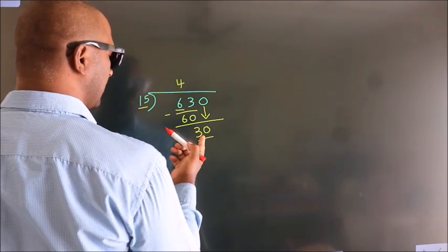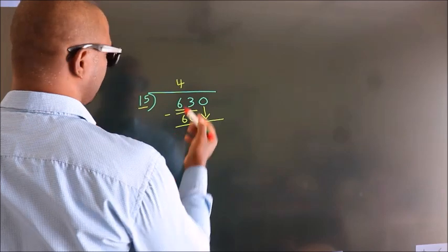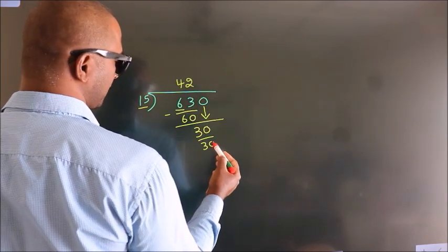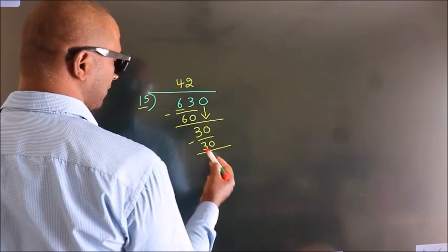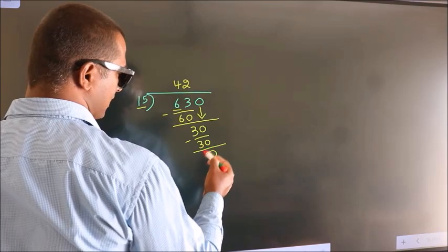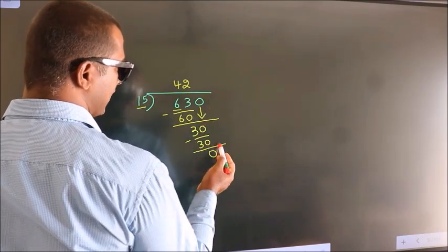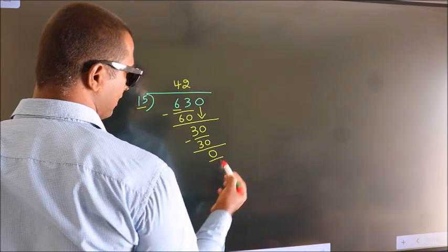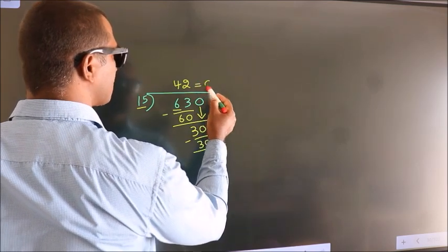When do we get 30 in the 15 times table? 15 twos are 30. Now we subtract and we get 0. After this, there are no more numbers to bring down, and we got remainder 0. So this is our quotient.